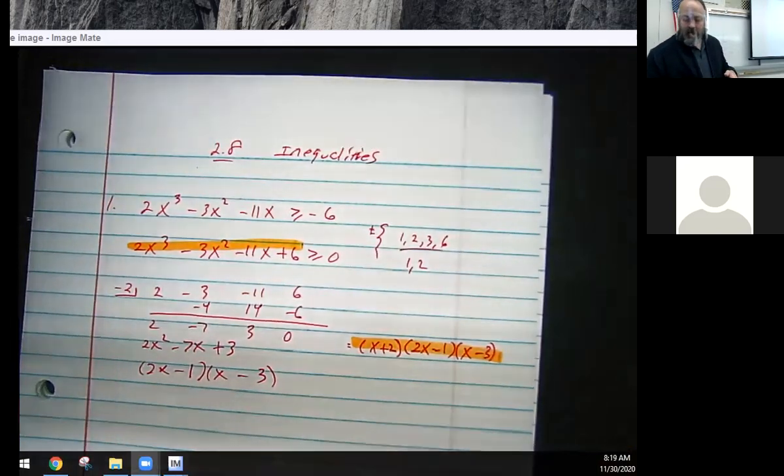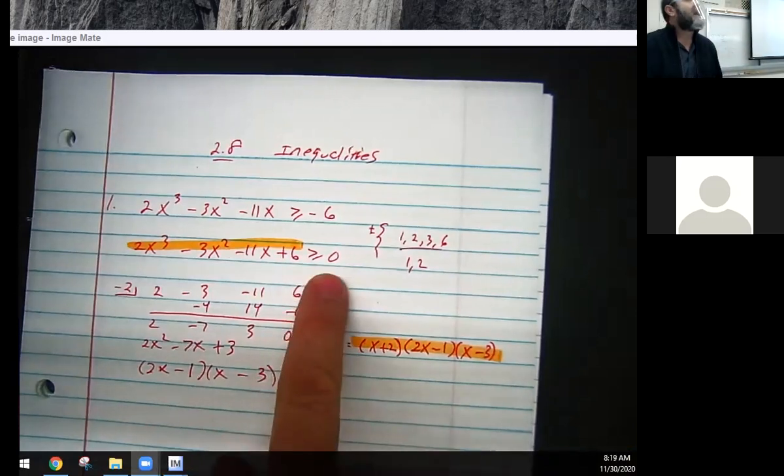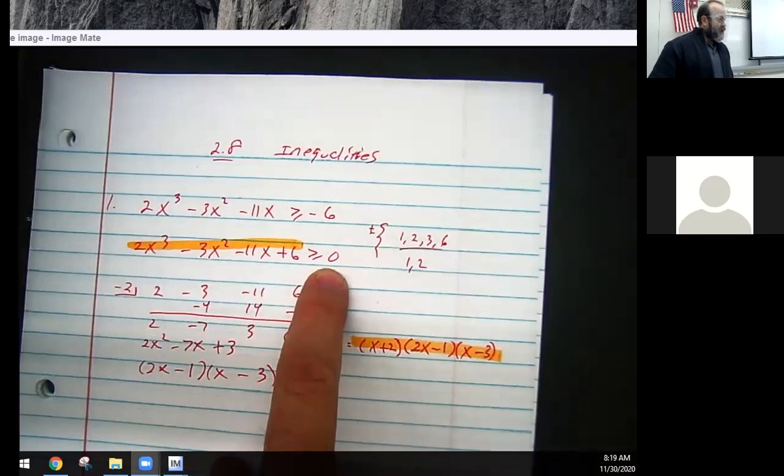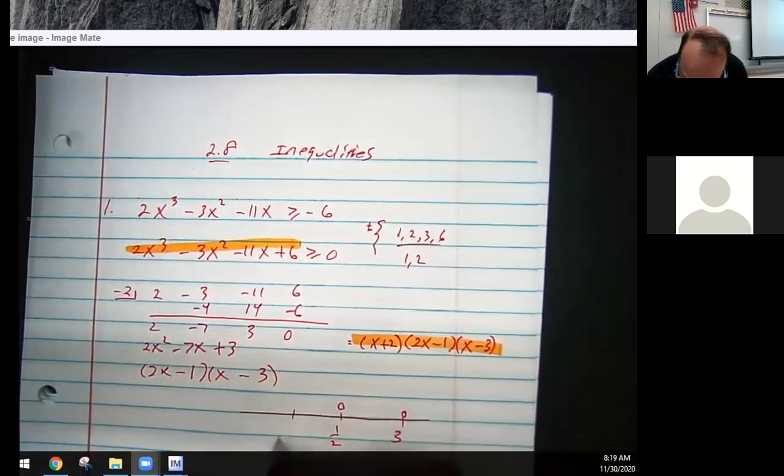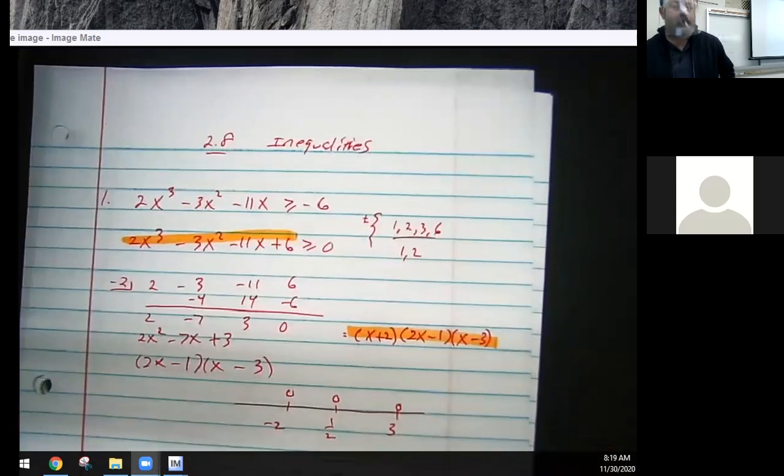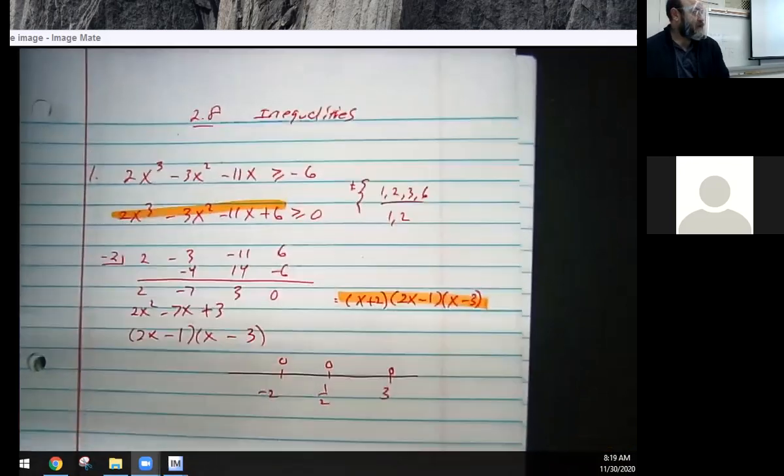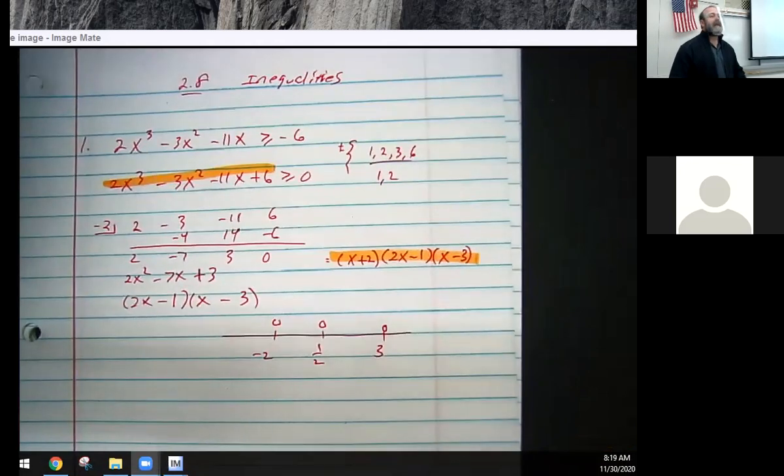So that looks to me like I have turned this crazy story up here into this set right there. You guys follow me? Now, keep in mind, I didn't want to know where 0 happened. What the question actually asked is, where is the graph above 0? You guys cool with that?